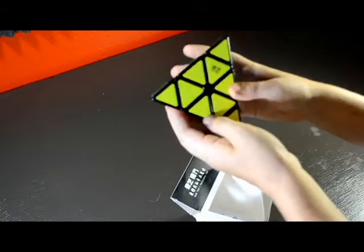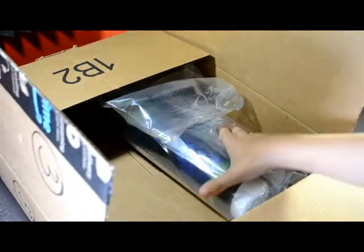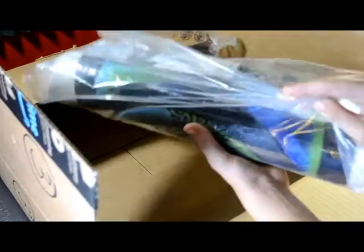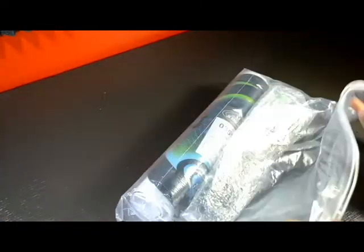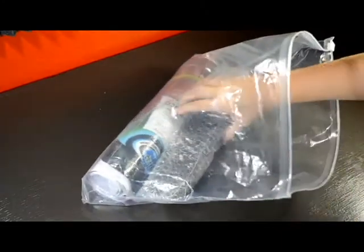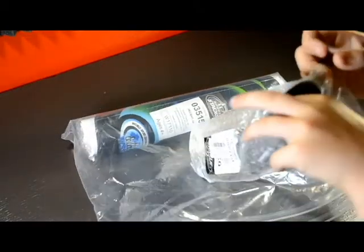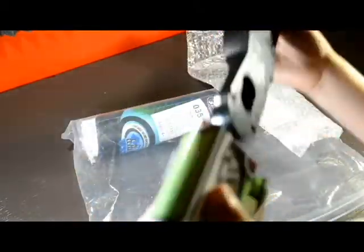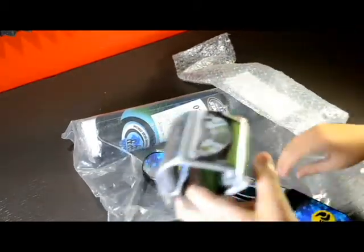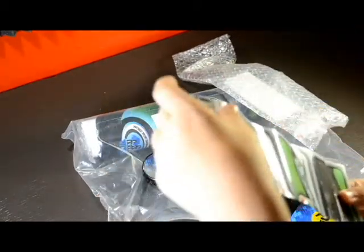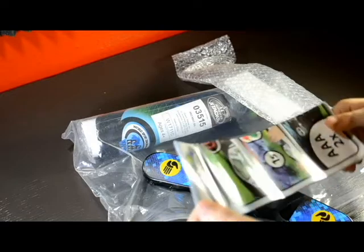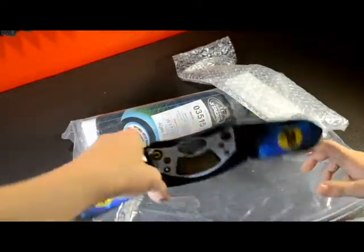Now we're going to do the Stack Mat Timer Gen 4. It's in a plastic bag. That's pretty weird. Here's some bubble wrap with the timer. It's pretty good. It looks pretty good too. Here's the little instruction thingy. And here's the timer.